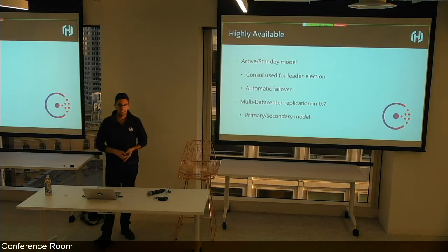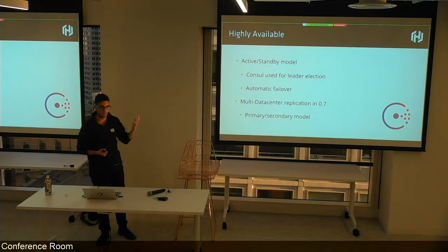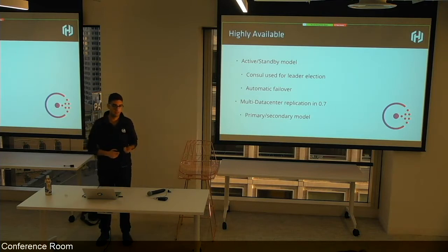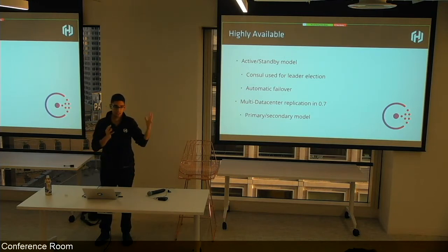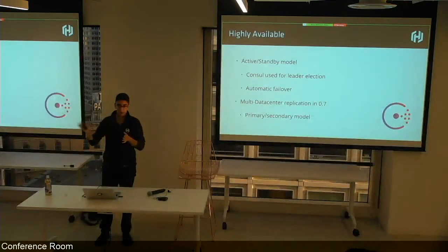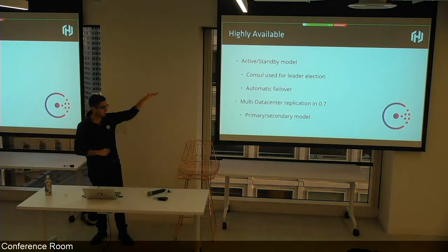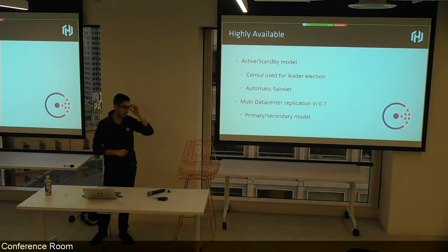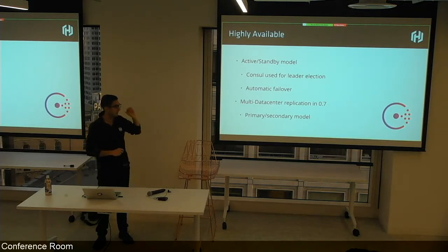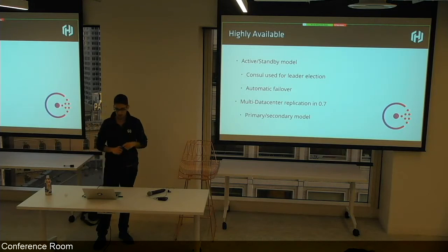Vault is very sensitive to availability since most apps struggle to operate without their credentials. From the start there's been an HA model with an active instance servicing operations and multiple standbys that take over automatically, using Consul, ZooKeeper, or etcd for leader election. New in 0.7 is replication, which extends active-standby to span across data centers.